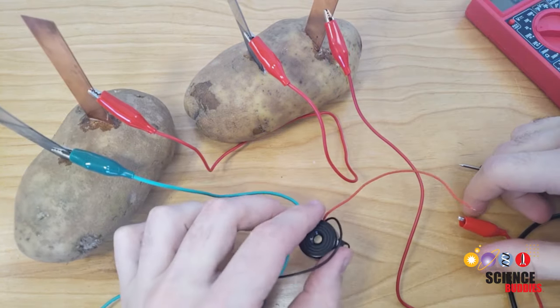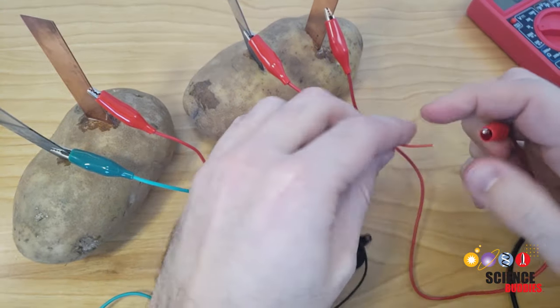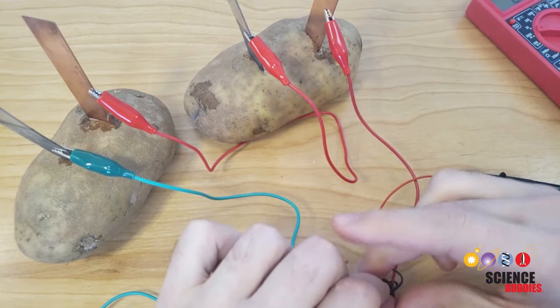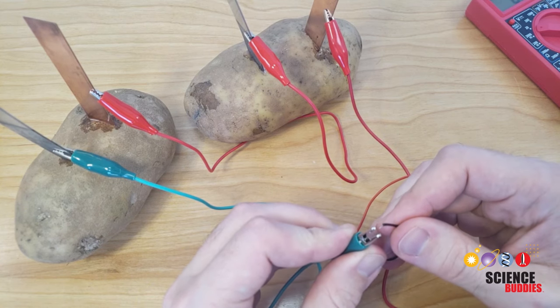You can try the same thing with the buzzer, which has two wires again, red for positive and black for negative. So I'm going to connect the red wire to the positive side of the battery, black wire to the negative side of the battery. And if this works, I should hear an audible buzzing.